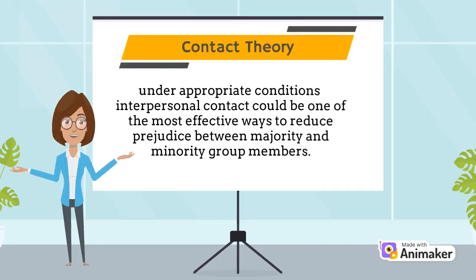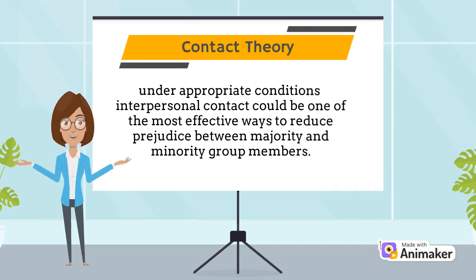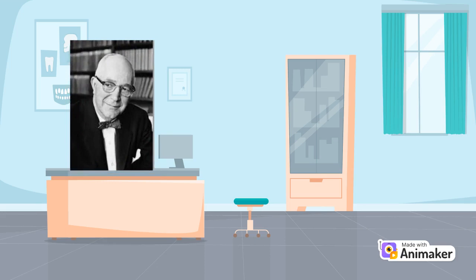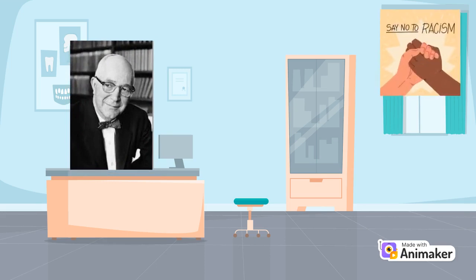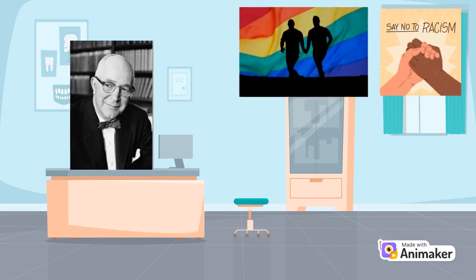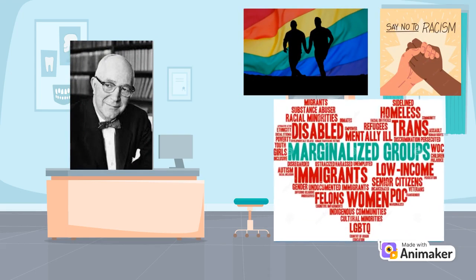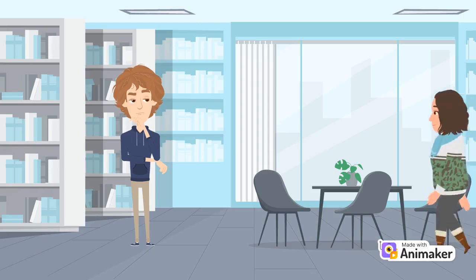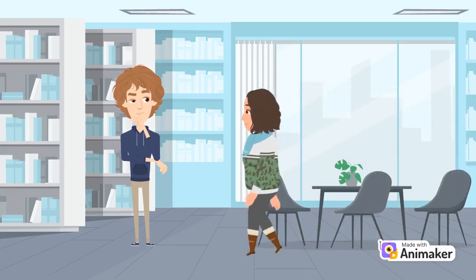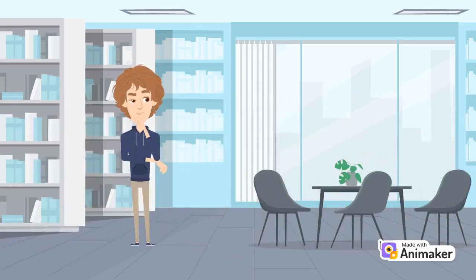This is contact theory. Under appropriate conditions, contact could be an effective way to reduce prejudice. It was introduced by American psychologist Gordon Allport. Contact theory has been studied in the context of racial prejudice, homophobia, and various other marginalized groups. Next time before judging someone — contact first.